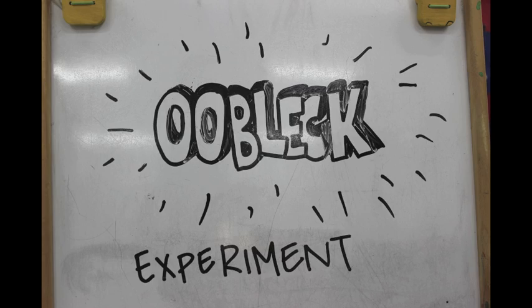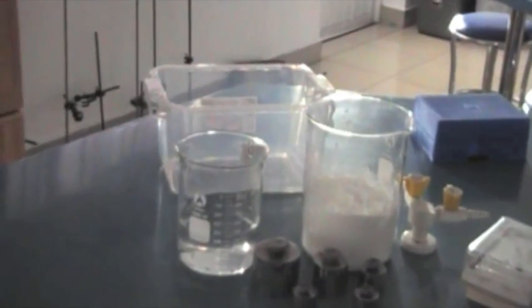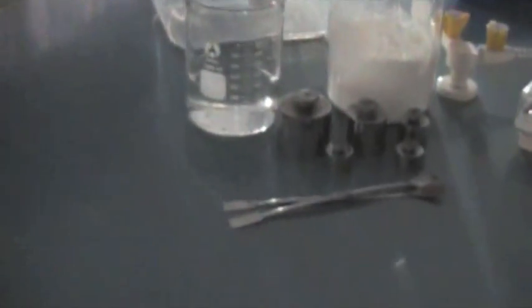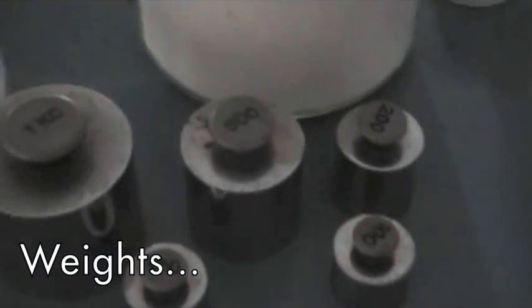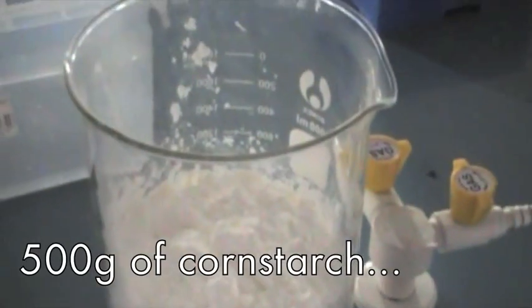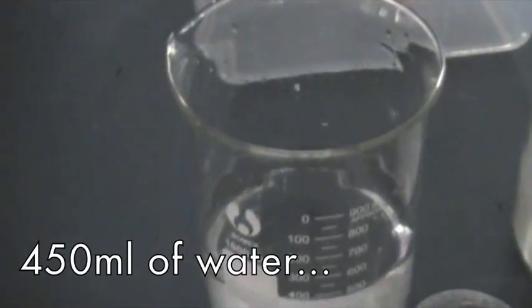Now for the OOBLEC experiment. First, you'll need spatulas, weights, 500g of cornstarch, 450ml of water, and a tub.